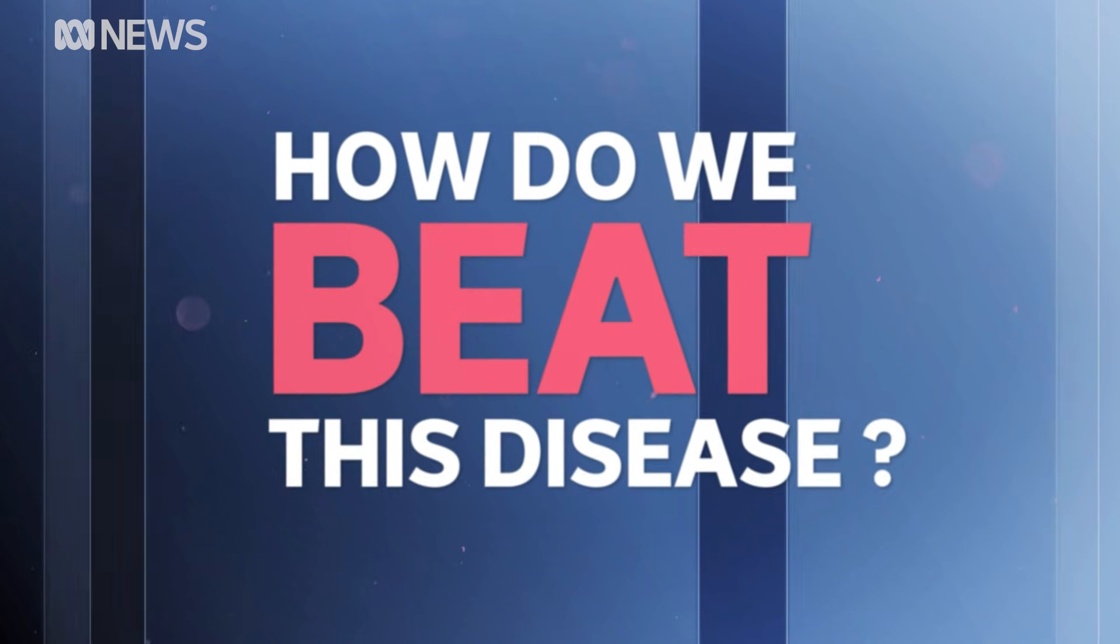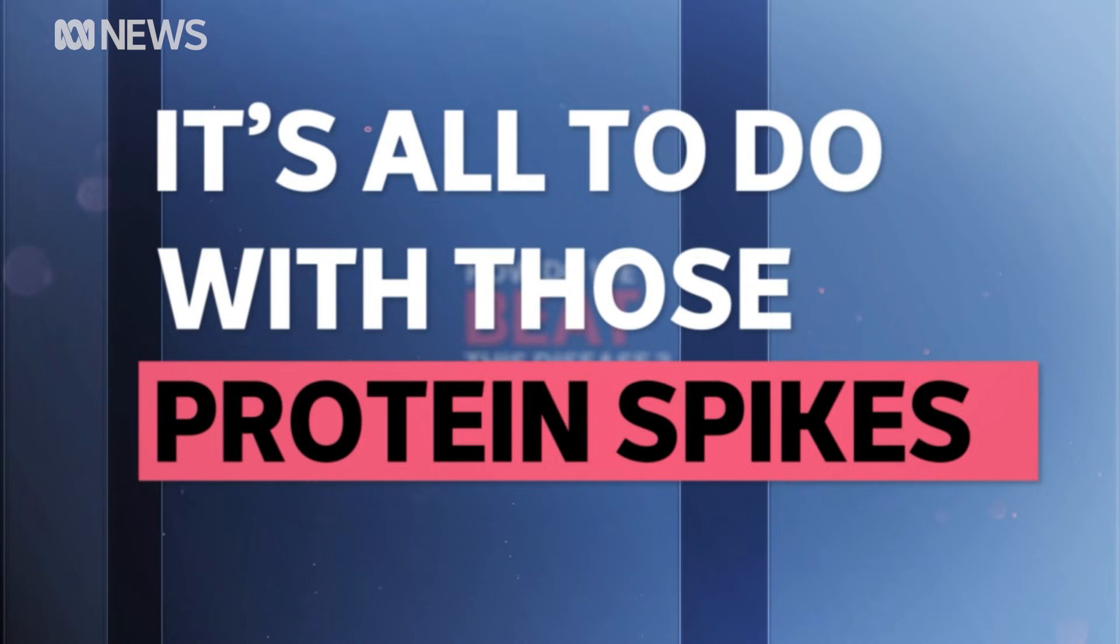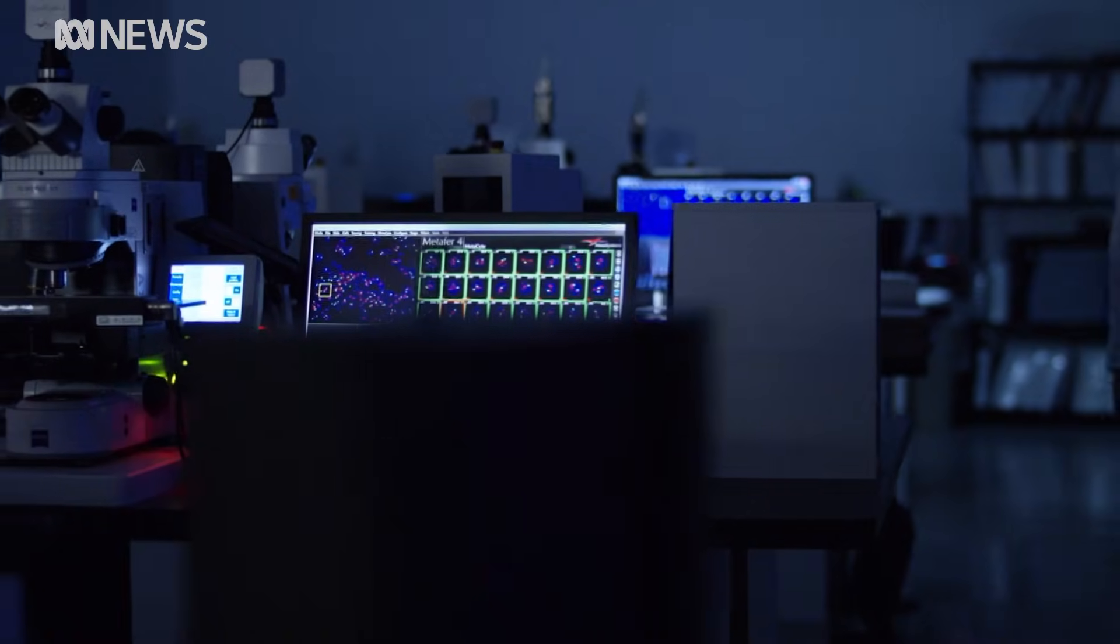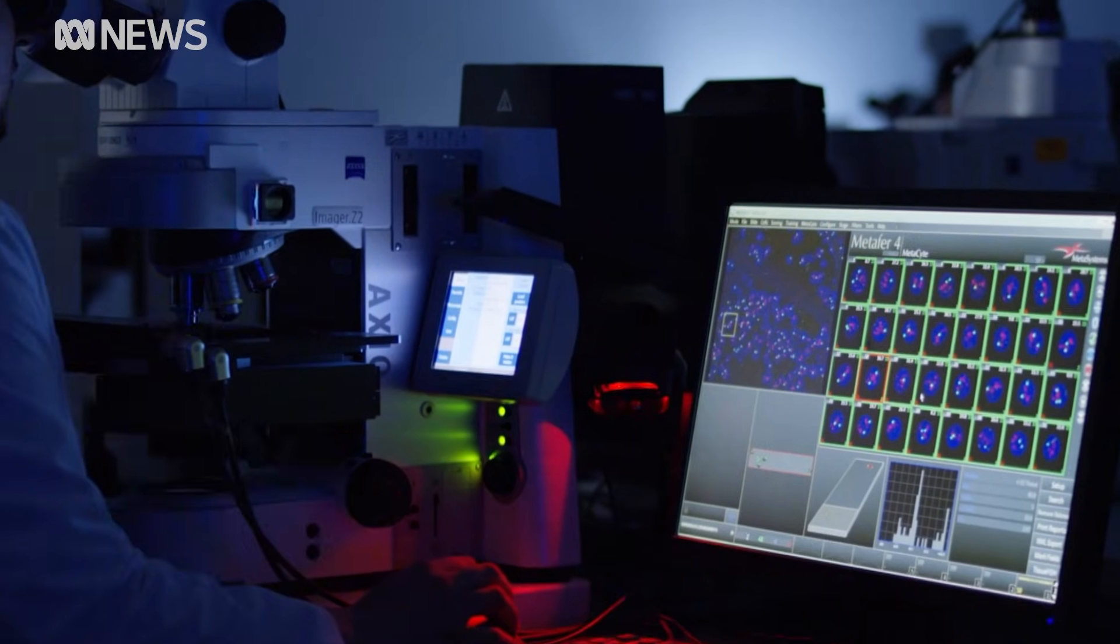So how do we beat this disease? Again, it's all to do with those protein spikes. They might be its strength, but scientists think they might also be its weakness. They now know its genetic code and can recreate it.